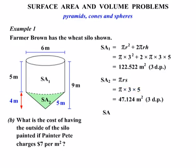Alright, working out our total surface area now, our SA1 plus SA2. We'll just get our 122.522 and add to that our 47.124. So adding them together, we get 169.646 m².